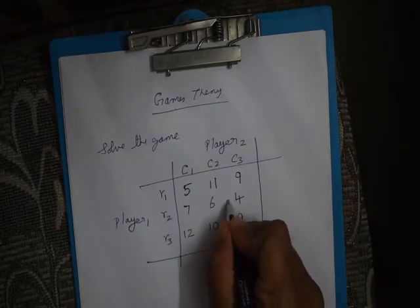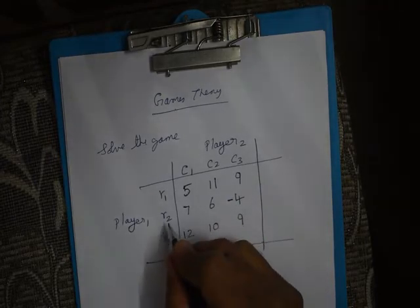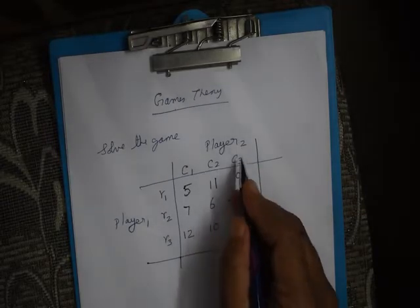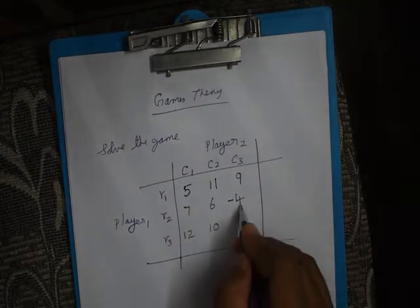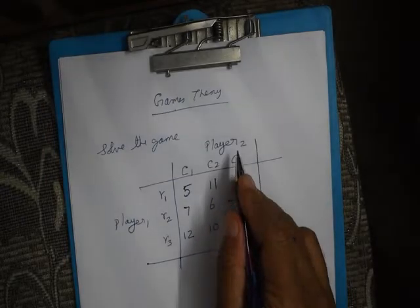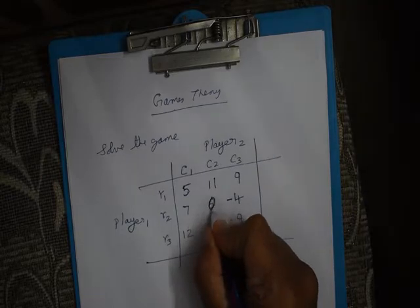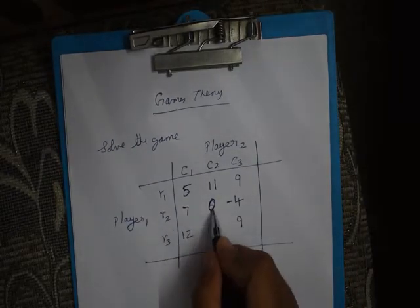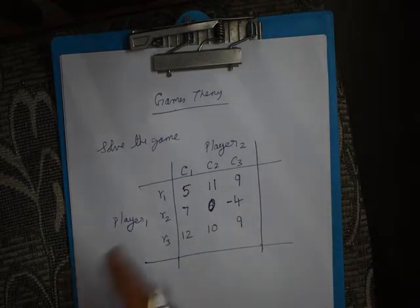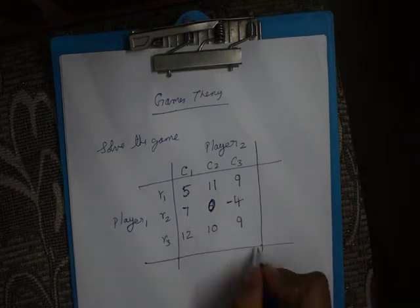You can take some values as negative scores. When Player 1 employs R2 and Player 2 employs C3, it is a loss of 4 for Player 1, which means it is a gain for Player 2. If the value is 0, when Player 1 employs R2 and Player 2 employs C2, the net result is 0, meaning no player gains or loses.